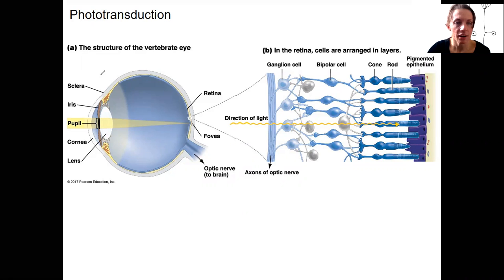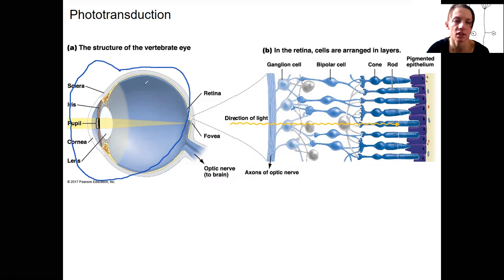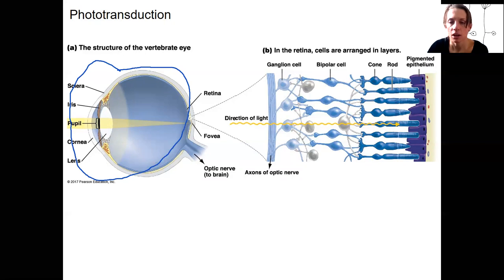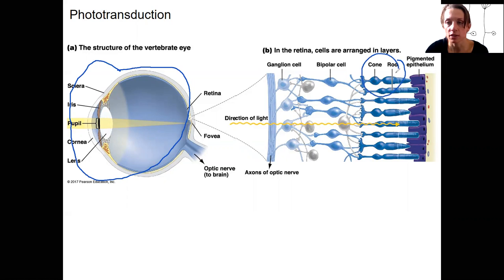This entire eye over here — the job of all these structures is to focus light from the external environment onto the retina. The fovea is where you're focused. The retina contains photoreceptors, these cells back here. These are the cells that carry out phototransduction. They are special senses, special sensory cells.